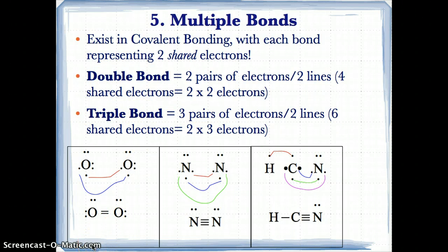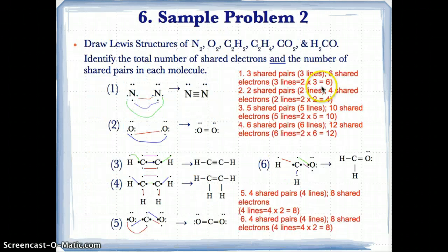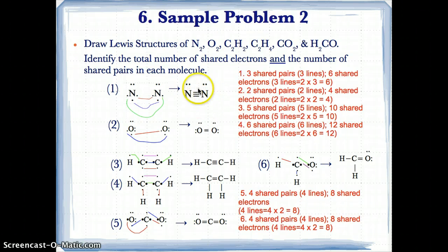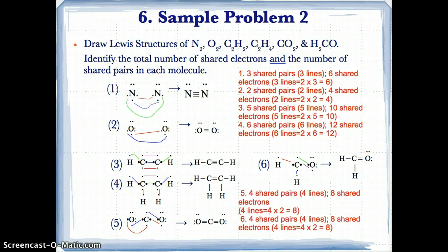Triple bonds consist of six shared electrons represented by three pairs or three lines. An example is N2, where each N has five valence electrons and three unpaired electrons; they pair up to give three bonds — six paired electrons — represented by three lines between the two N atoms. Another example is HCN, which you can try on your own by pairing the unpaired electrons. Remember: each bond or line represents two shared electrons. In N2, three lines equal six shared electrons; in O2, two lines equal four shared electrons.